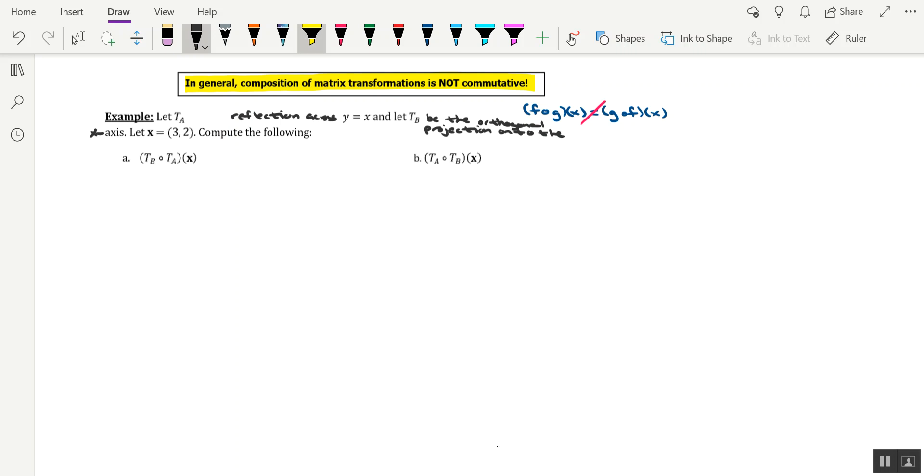They're giving us a specific vector x in this example, and they want us to apply the composition of these two matrix transformations in two different ways, and seeing how it affects the vector x. So let's start with example a. We have t sub b of t sub a of x. Again, you want to think backwards. The first transformation to be used is actually t sub a, and then whatever vector you get out of that will be plugged into t sub b.